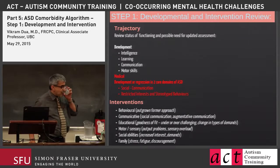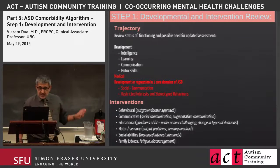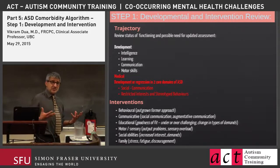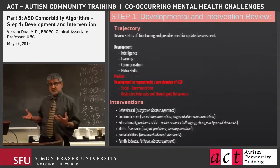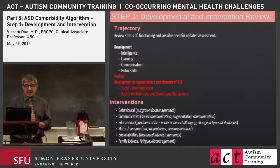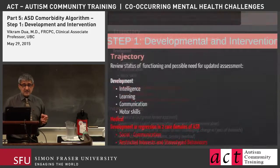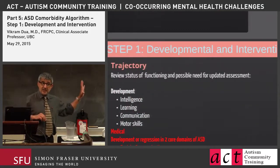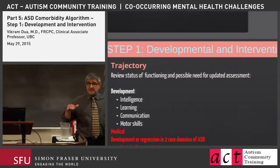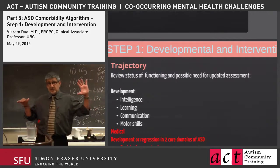Step one is a developmental review. If you're seeing individuals for autism spectrum disorder in clinic for behaviors or whatever issues are going on with them, you have to start by really looking at their development. That involves looking at trajectory. We know that kids with autism have higher prevalence of a variety of developmental problems — intellectual disability, language disorders, and so forth.